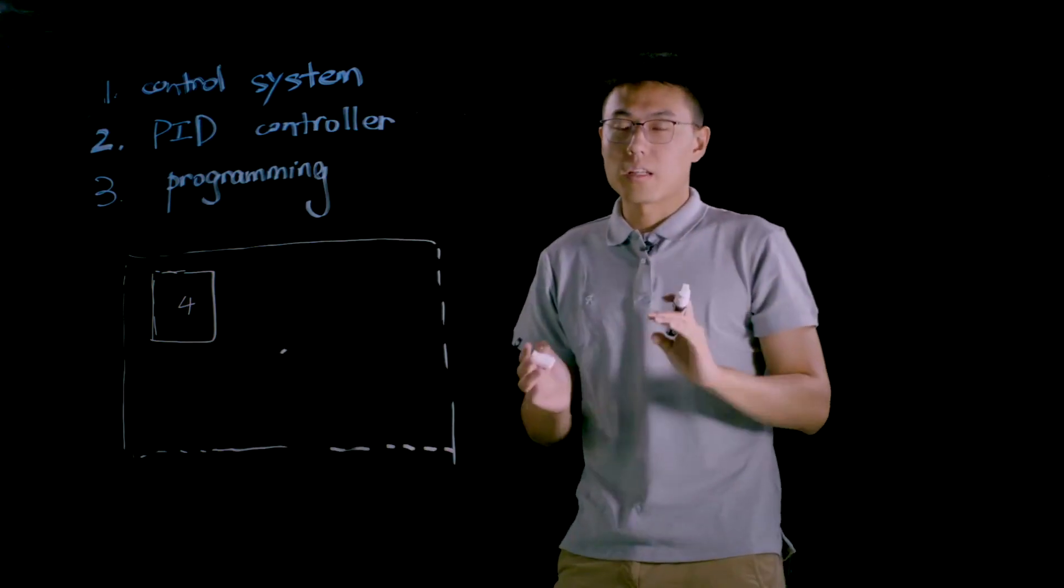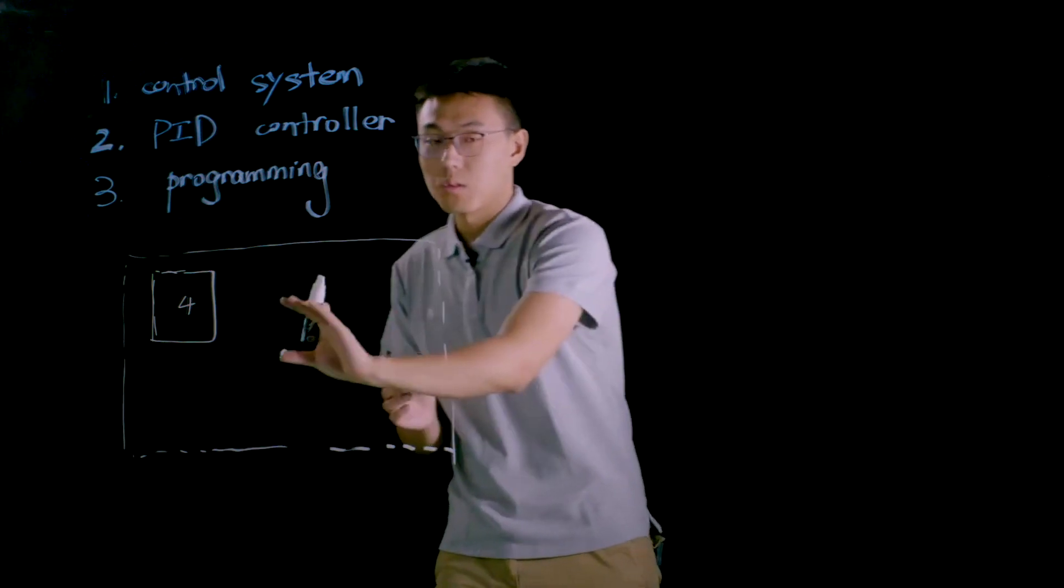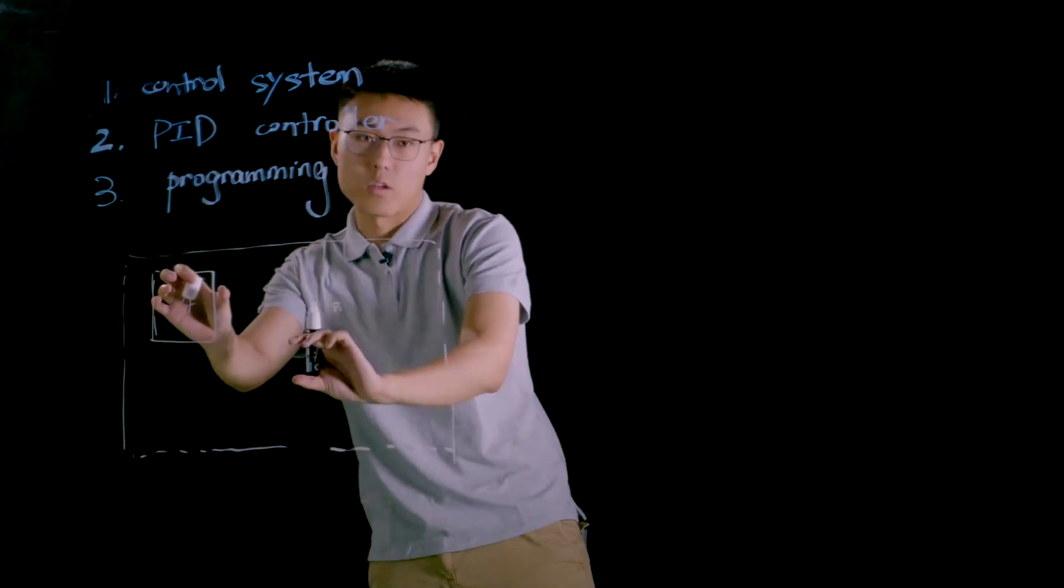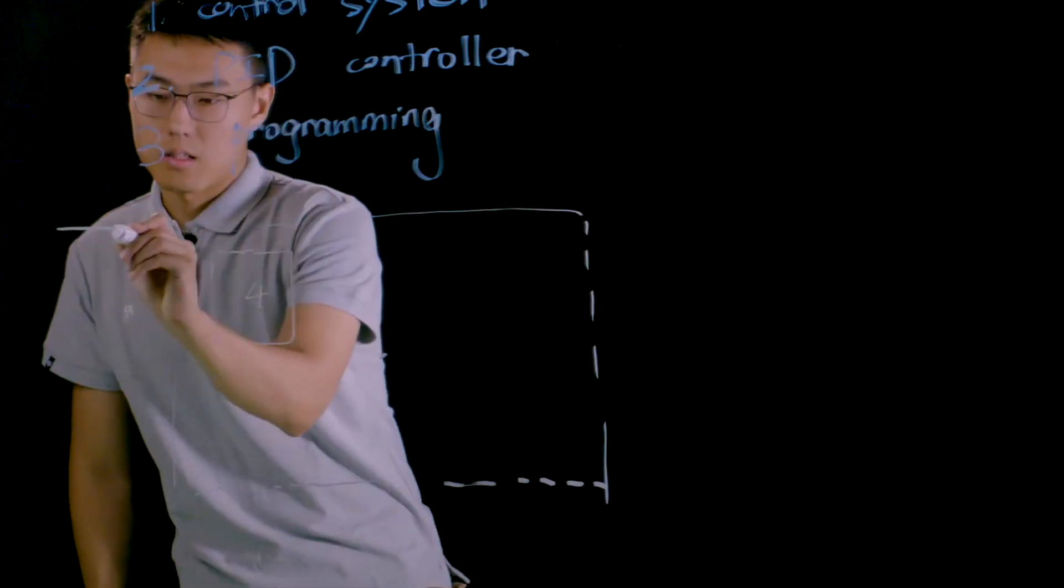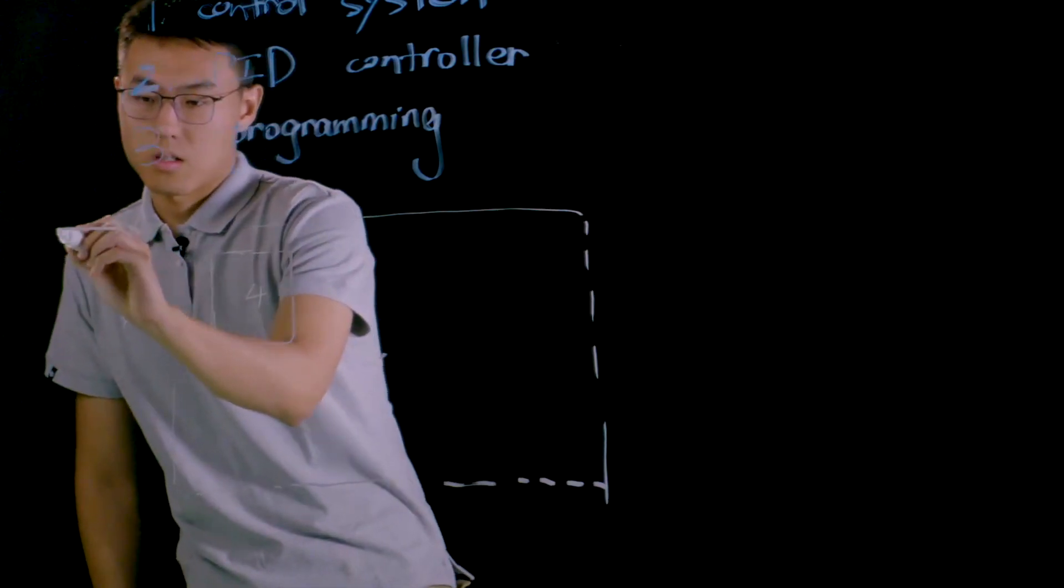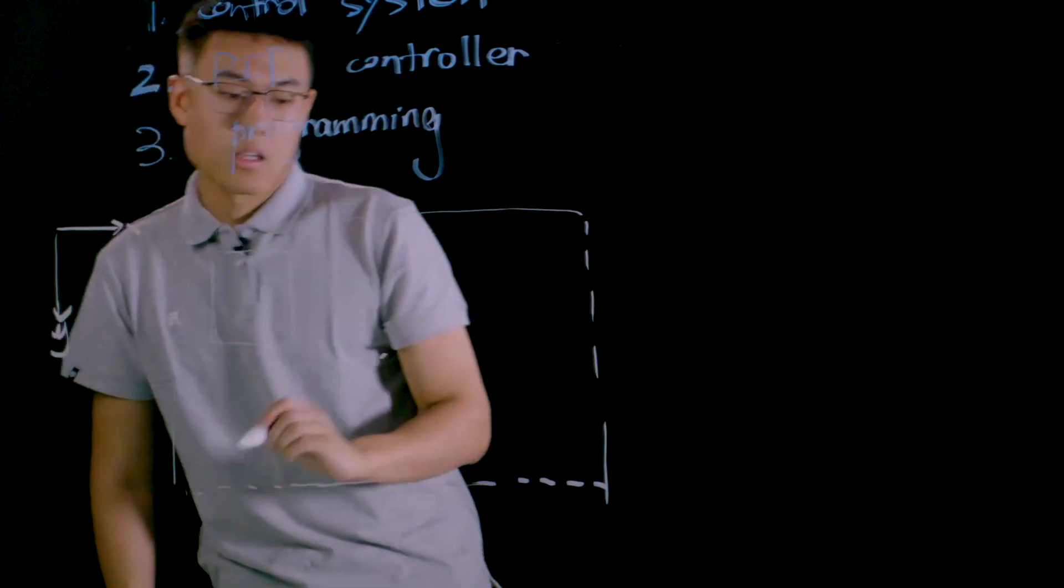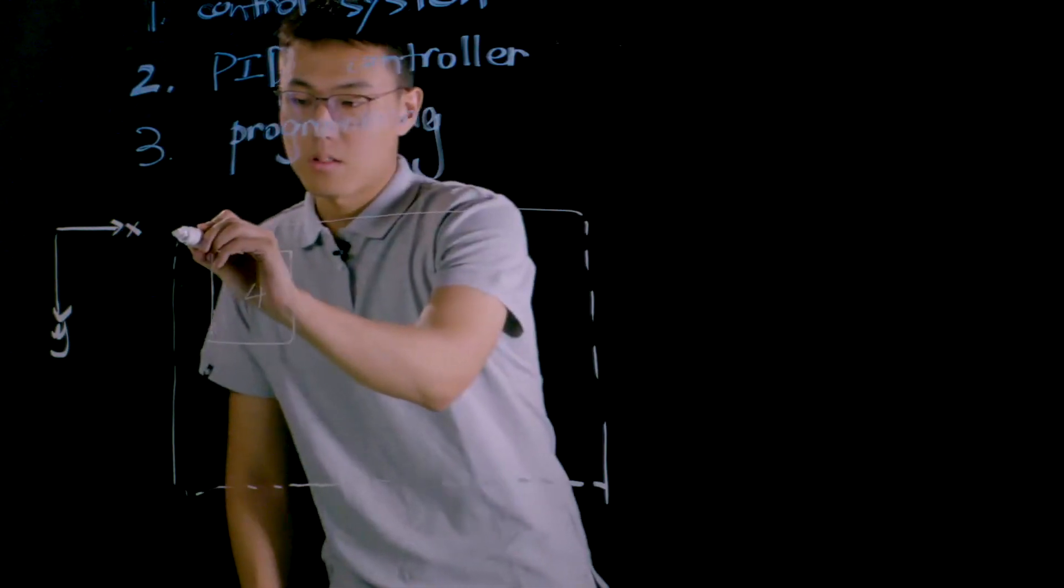So actually we need to use the PID controller to move the gimbal to eliminate the error between the position of visual marker and the center of the viewport. Let's say this is the positive x direction and this is the positive y direction. And this is the origin.